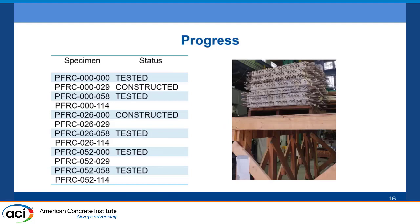Regarding current progress: we have five panels that have been tested and two more have been constructed. Data analysis has only been completed for the first two. The specimen names reflect the fiber content and reinforcement ratio. We also have a stack of panels in the lab — two on top are newly constructed, the rest have been tested. Later, these panels will be used for pull-out tests to understand if fibers also contribute to the bond of steel bars.